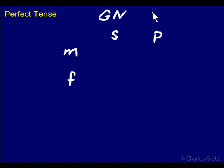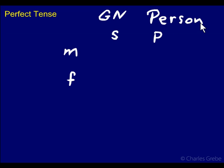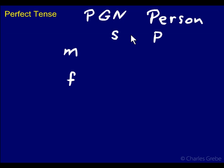Now verbs have, in addition, something called person: first, second, and third person. Generally we talk about it in this order — PGN: person, gender, number.